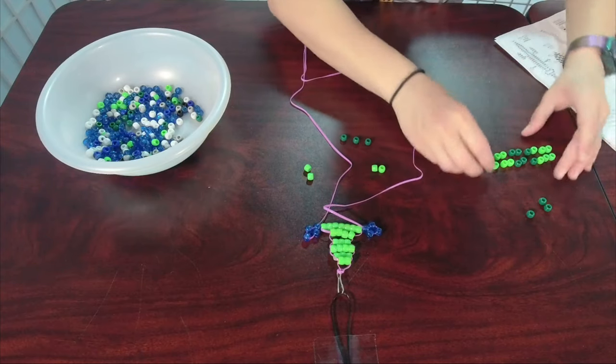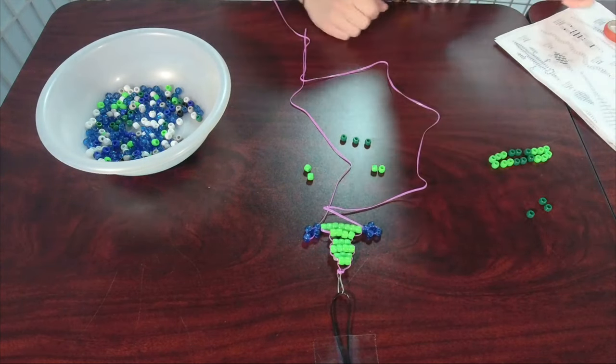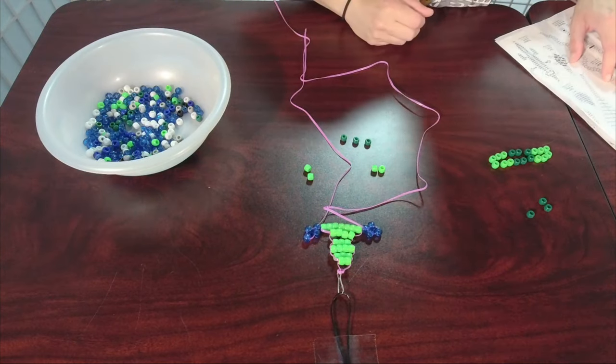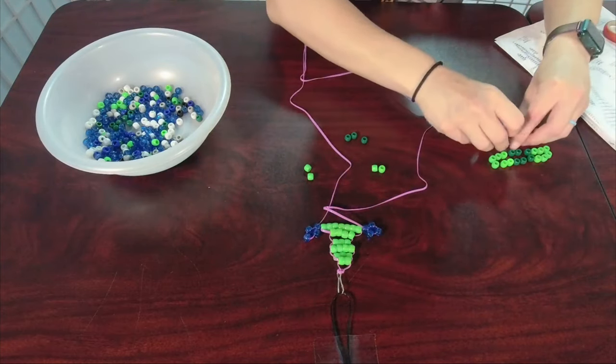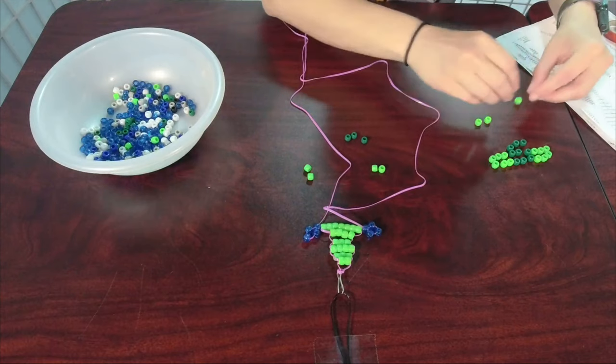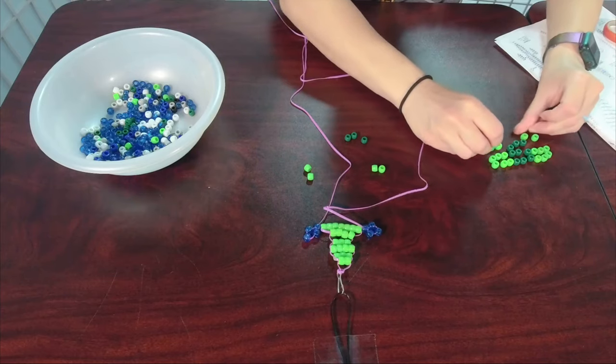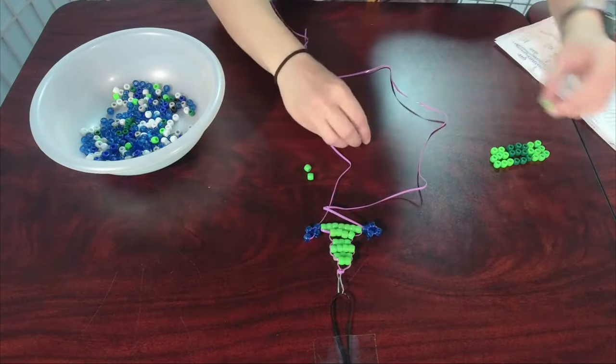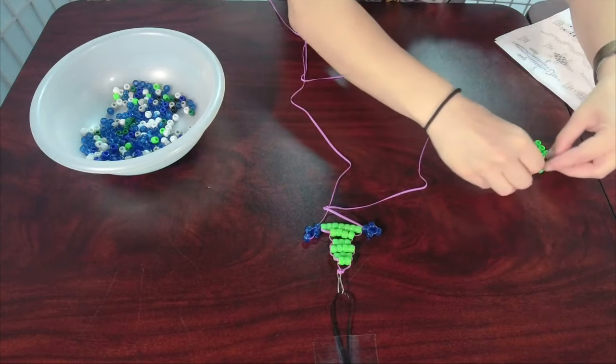Turtles are also cold blooded, so you don't usually find them in the Arctic. But they could be found on every continent besides the Arctic and the Antarctic. We got another row of nine. That's that one. And then we have another row of seven. So that'll be these three. So you can kind of see how the pattern's going to look when I get it done.